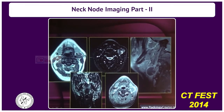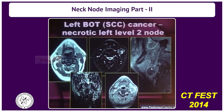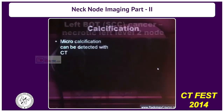Another patient has a necrotic node on the left side showing rim enhancement following contrast — this is a floor of base of the tongue tumor with a necrotic level 2 node. They can sometimes be purely cystic, and occasionally you will see solid areas. But even if it is purely cystic, don't assume it is tuberculosis or something treatable — in cancer, this is something we should not miss.